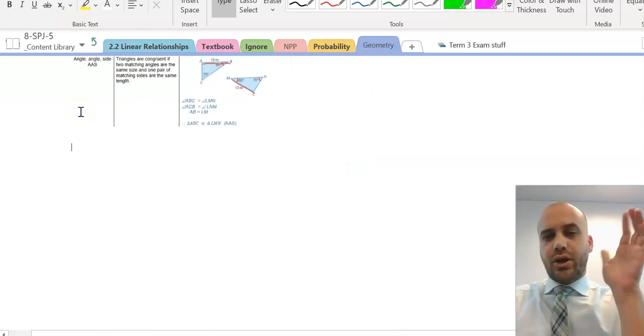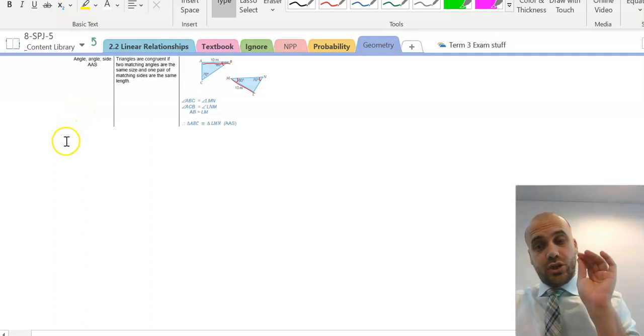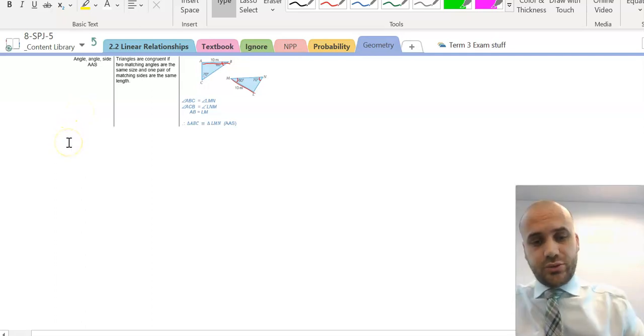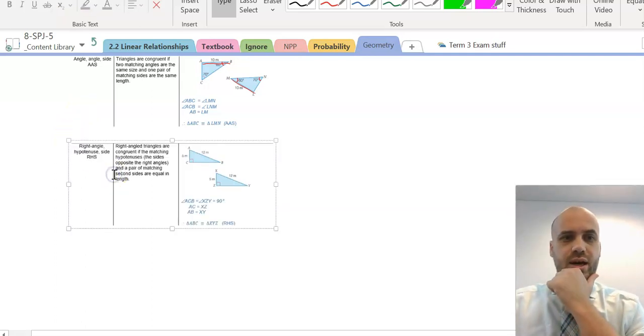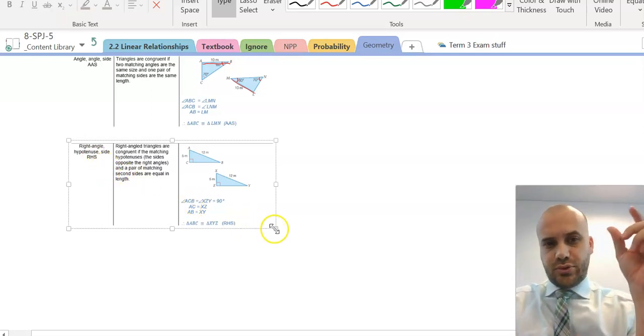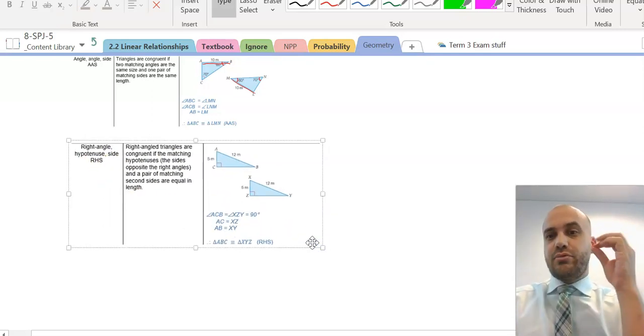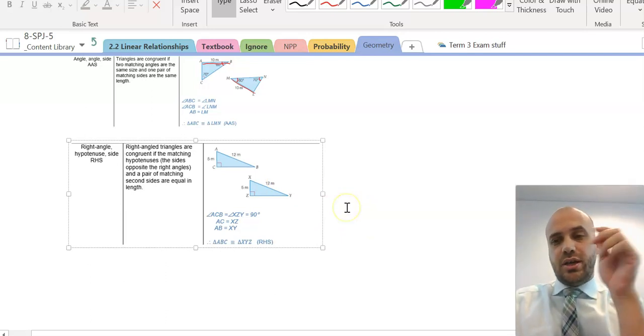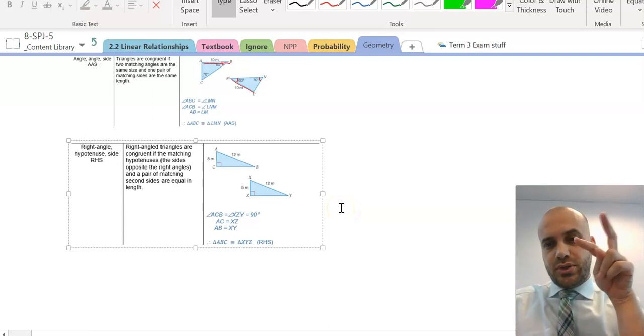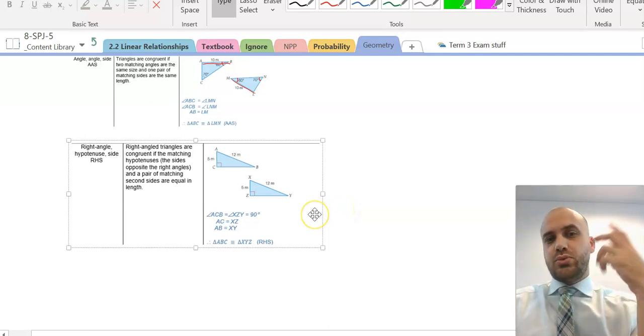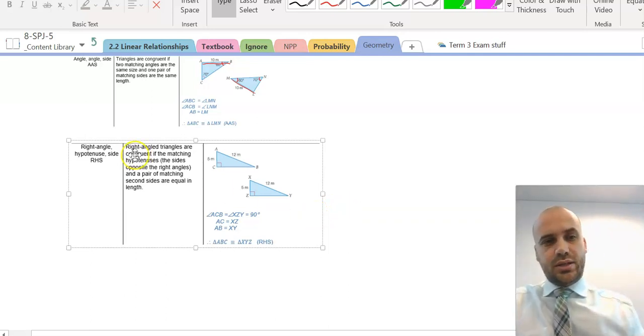The last rule here only exists for a certain type of triangle, and that is right-angle triangles. It is the RHS rule. So, if you have a right angle, and if you know the hypotenuse, that's the longest side, if you know the right angle and the hypotenuse are there, all you need is one more side and you're done.